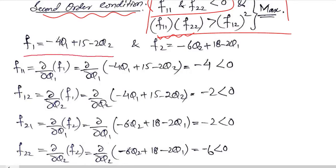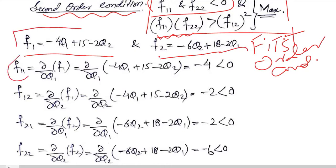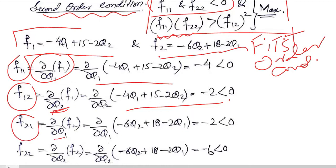We have the value of F1 and F2 from the first order conditions. These are the first order conditions that we can use to find out F11 by again differentiating F1 with respect to Q1. This will be the result. Then differentiating F1 with respect to Q2 this will be the result. Differentiating F2 with respect to Q1, this will be the result. And then differentiating the value of F2 with respect to Q2, we will get this value.